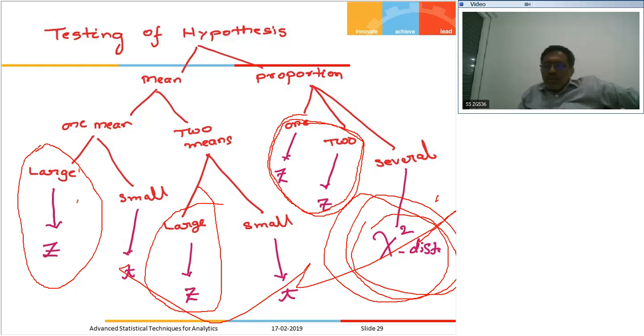The technique to identify Z and T distribution is very simple. This is what they call the size of the sample. If the sample size is greater than 30, we have to go for Z distribution. If the size of the sample is less than 30, that is small sample, we have to go for T distribution. When we have a probability of proportion, then we have to go for Z distribution.